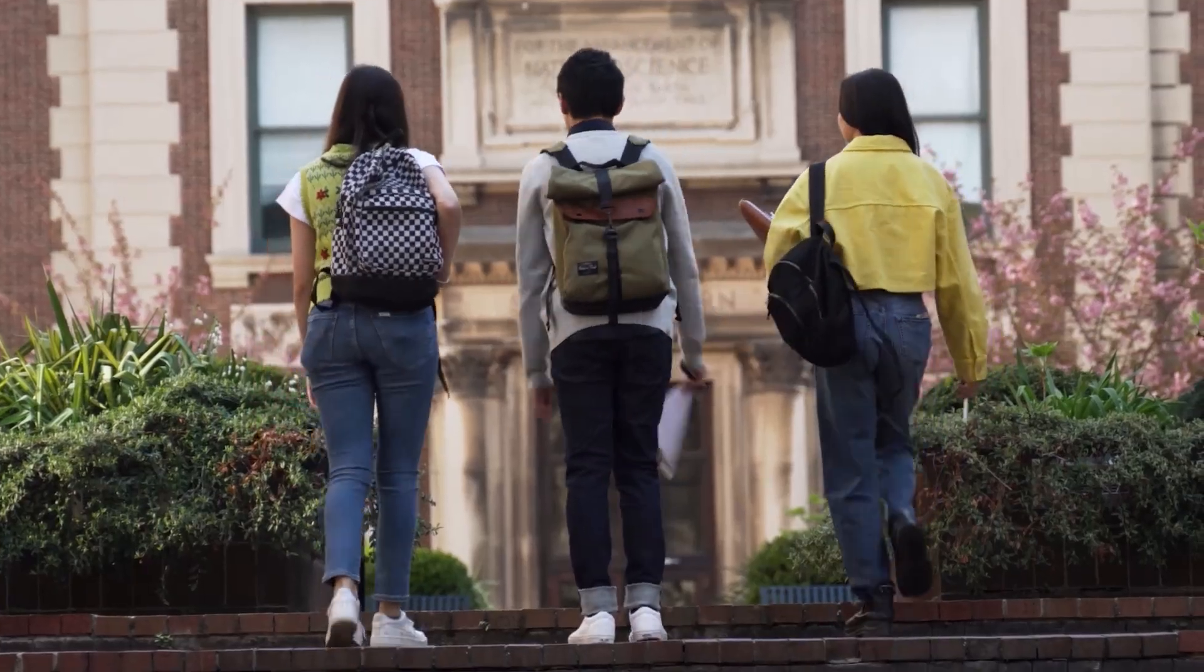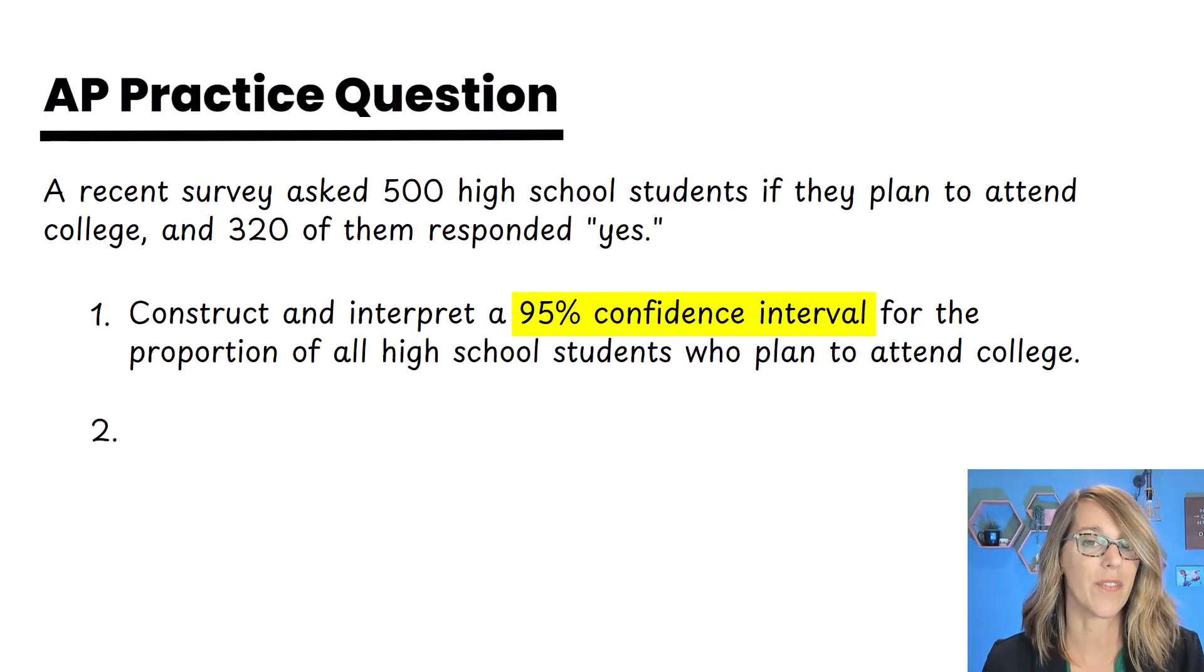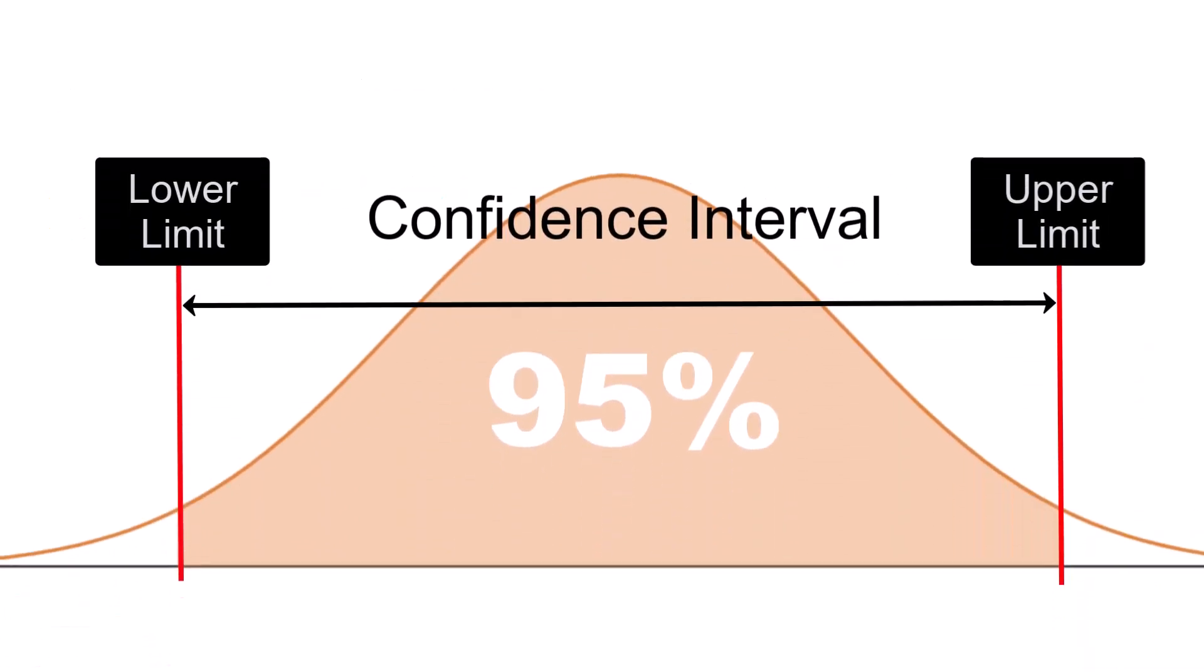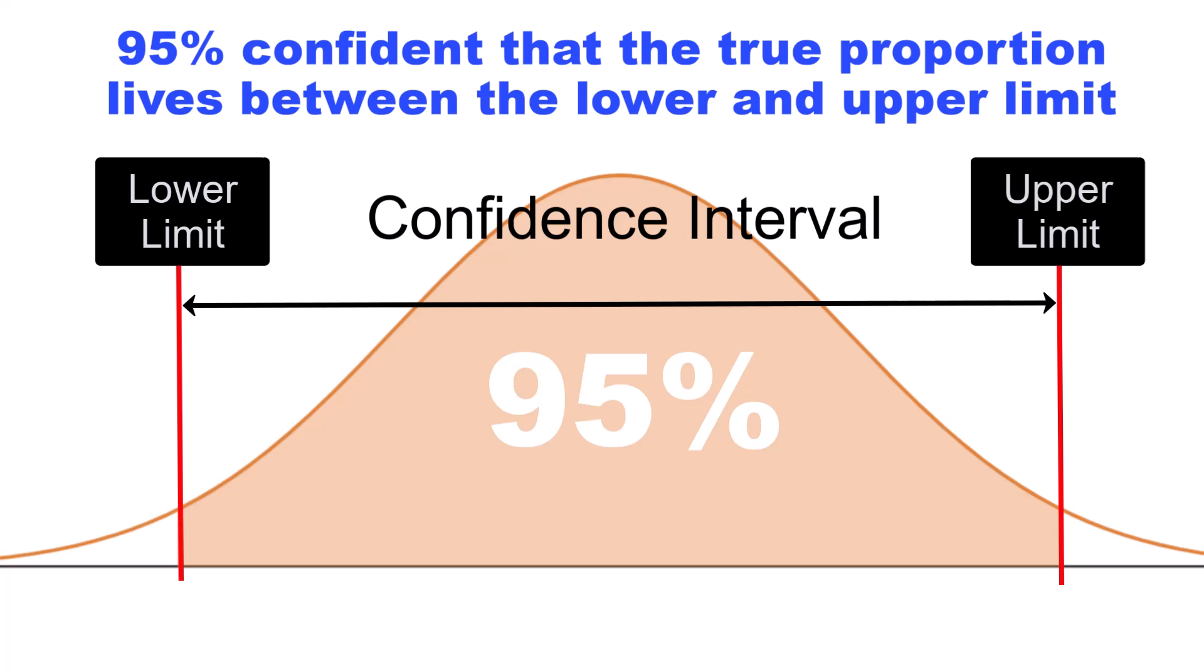We want to find the 95% confidence interval that contains this true proportion or percentage and I'm also going to show you how to find the margin of error. This confidence interval is going to tell us that we're 95% sure that the actual proportion of high school students is between the lower limit and the upper limit.